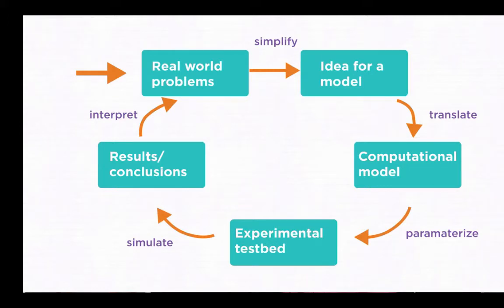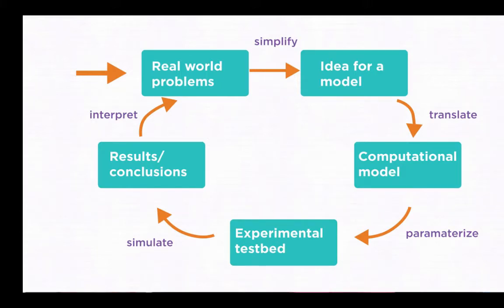Finally, we run simulations using the computer model we created as an experimental test bed. Simulations run time forward as if we could speed up time to see how the future unfolds. During the simulation we can produce and capture data. From these data, we draw conclusions and interpret if our model has any basis in reality. If the model reproduces features of reality that we care about, as compared to real-world data, perhaps it can be used to help us understand or make predictions about the real world.